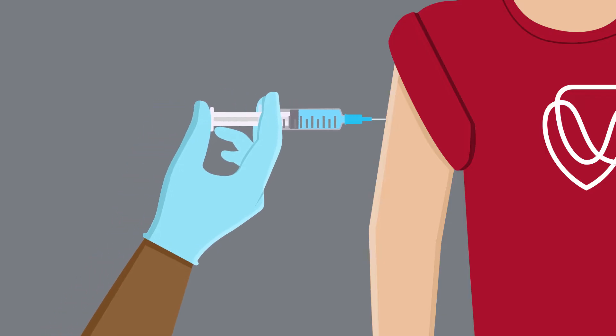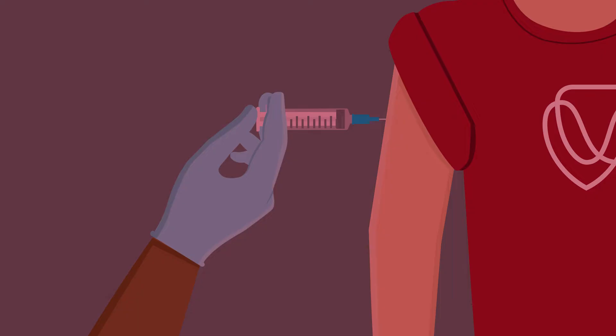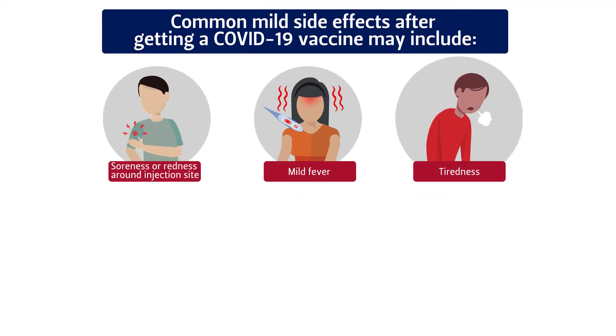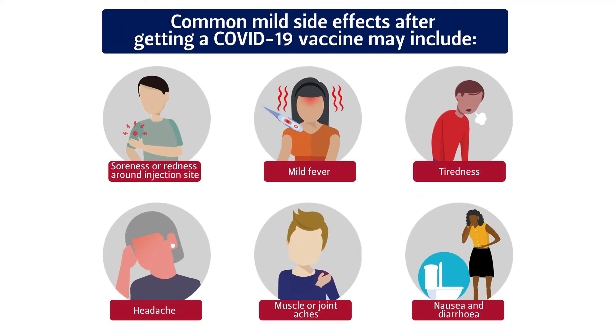You can get COVID-19 from the vaccine. Wrong. The mRNA vaccine does not contain weakened COVID viruses like other vaccines. However, you may still experience some mild side effects such as fatigue, aches and pains, and mild fever.